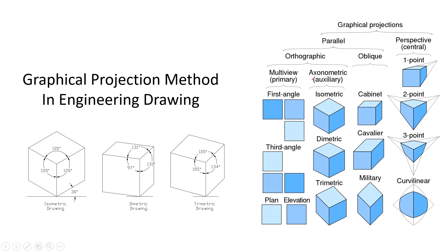Axonometric Projection is a subtype of orthographic projection commonly employed in engineering drawing and technical design. The three types are: first, isometric; second, dimetric; third, trimetric.